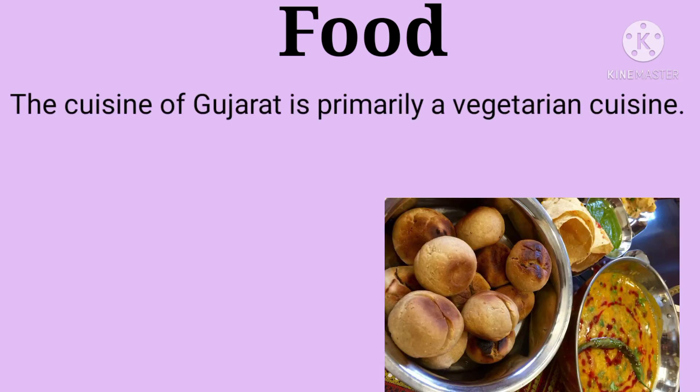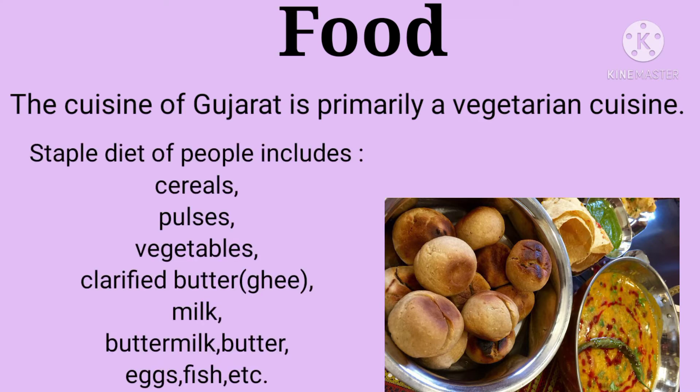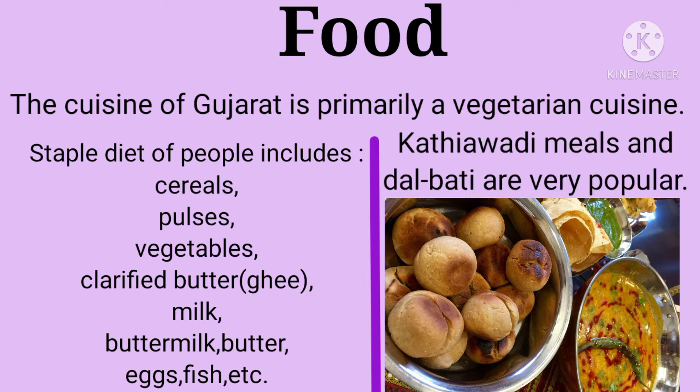Food: The food peculiarity is that the cuisine of Gujarat is primarily vegetarian. The staple diet of people includes cereals, pulses, vegetables, clarified butter i.e. ghee, milk, buttermilk, butter, eggs, fish, etc. Also you can see in the picture, Kathiawadi meals and dal bati are very popular.